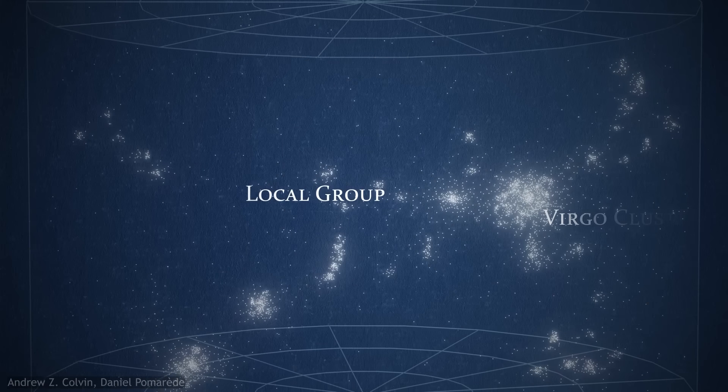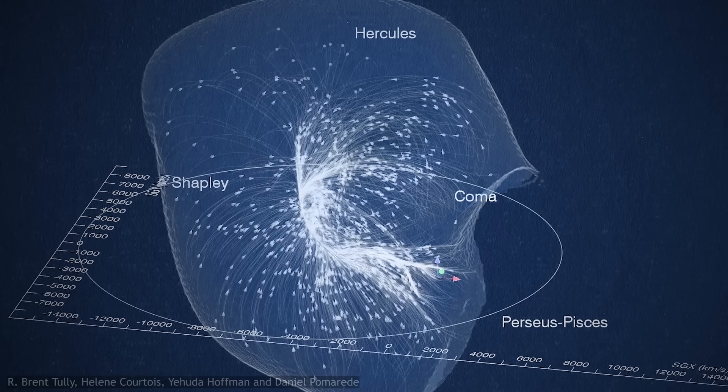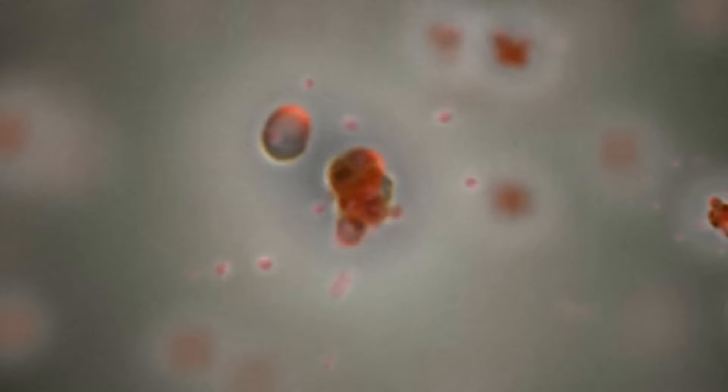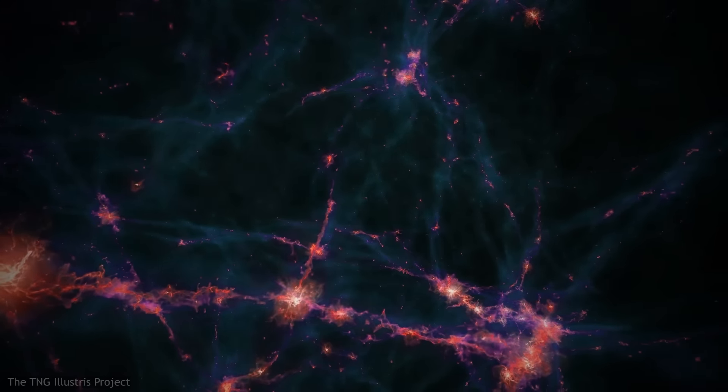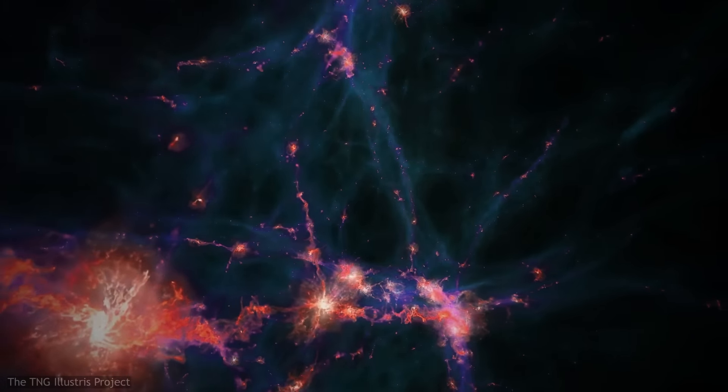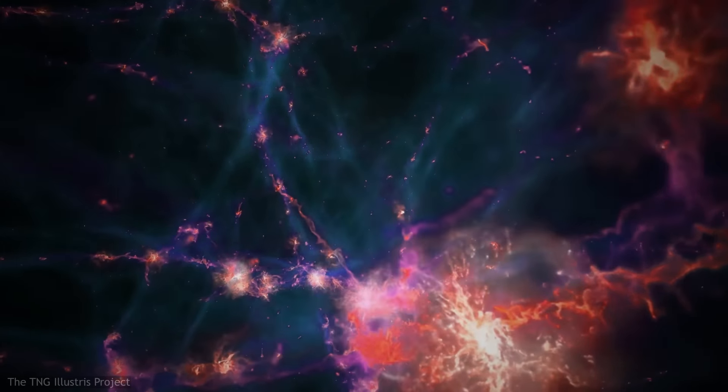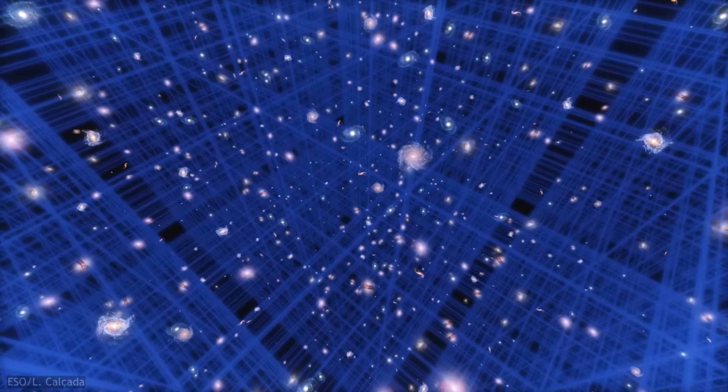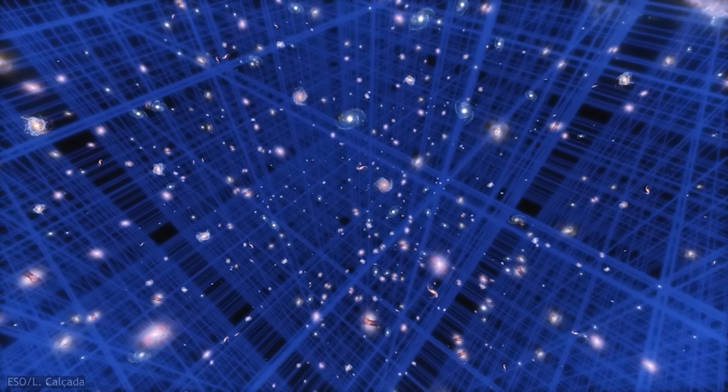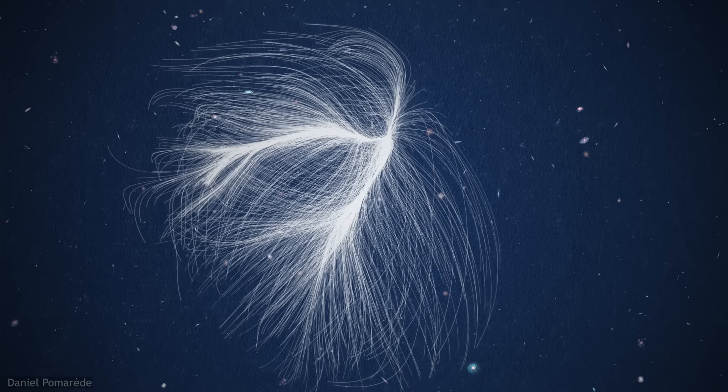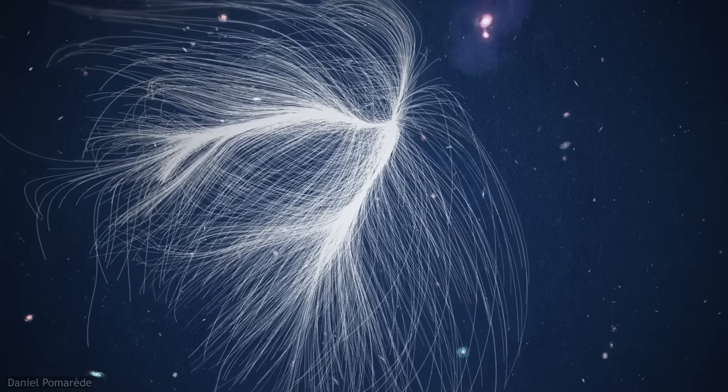The local group, the Virgo cluster, the Laniakea supercluster, they were all built atom by atom, galaxy by galaxy. They took billions of years of slow and steady movement to reach their current stunning grandeur. While the rest of the universe may be continually getting bigger, and galaxies gently drifting away with the Hubble flow, the galaxies of Laniakea should always have been able to call it home. Until dark energy tipped the balance.